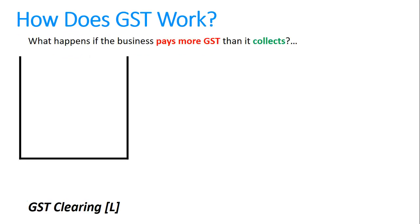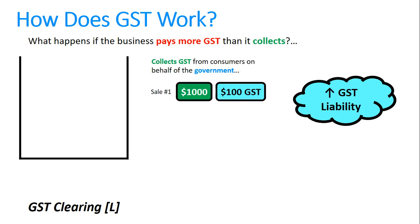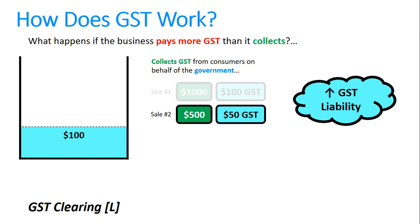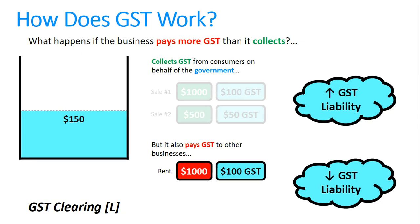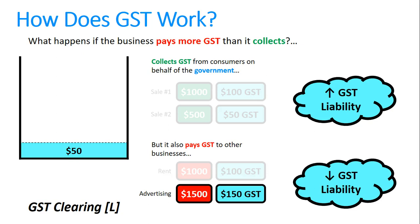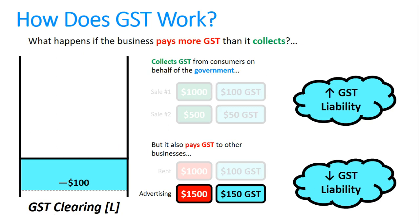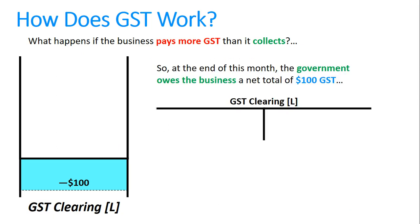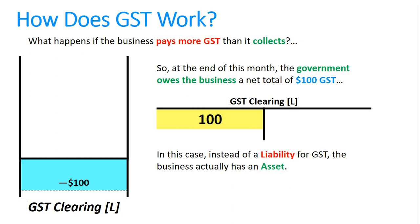Sometimes a business ends up paying more GST than it collects. For example, sales of one thousand and five hundred dollars generate one hundred and fifty dollars GST collected. But paying one thousand dollars rent with one hundred dollars GST and fifteen hundred dollars advertising with one hundred and fifty dollars GST means the GST liability goes below zero. That actually means the government owes the business money — a refund of one hundred dollars — which is recorded as a debit to GST clearing, making it an asset.